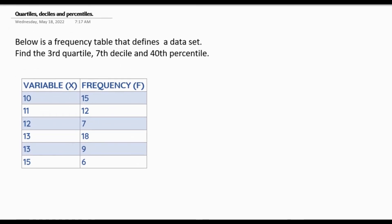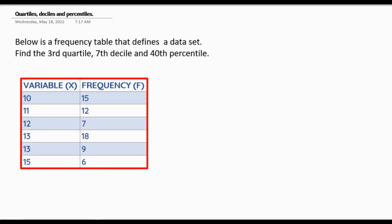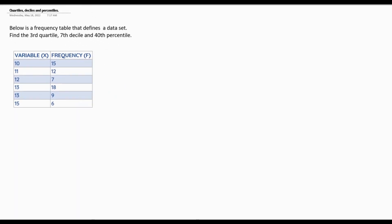Our question says that below is a frequency table that defines a dataset. We are supposed to find the third quartile, the seventh decile, and the 40th percentile. What I'm going to do is quickly sketch out the frequency table given to us — I'm going to reconstruct it. It's easier to work with it that way.